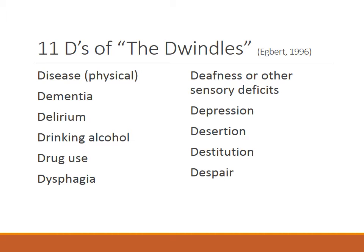Geriatric syndromes are multifactorial health conditions that occur when the accumulated effects of impairments in multiple systems render an older person vulnerable to situational challenges. They pose special clinical considerations: multiple risk factors and multiple organ systems are often involved. Diagnostic strategies to identify underlying causes can be ineffective, burdensome, dangerous, and costly. Therapeutic management of clinical manifestations can be helpful even in the absence of a firm diagnosis or clarification of underlying causes.